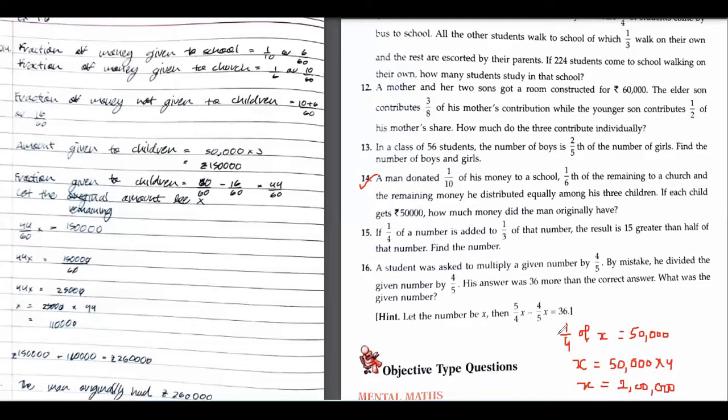I hope the answer is correct. Yes. Okay. Any doubt in this? No. Hope you understood the mistake. The word remaining you were not focusing on. Whenever you have the word remaining, you have to subtract from the total. That is 1. Fraction is always, total is 1.